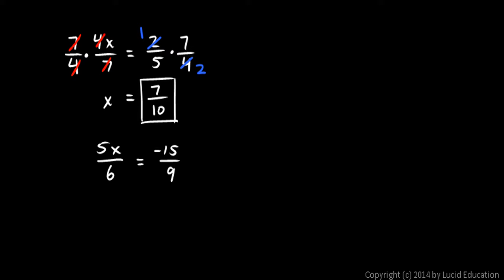In the second example, 5x over 6 equals negative 15 over 9. I need to get rid of the 5 and the 6 in order to isolate x, so I multiply by 6 over 5. And whatever I do to the left, I also have to do to the right. So I also multiply by 6 over 5 on the right.